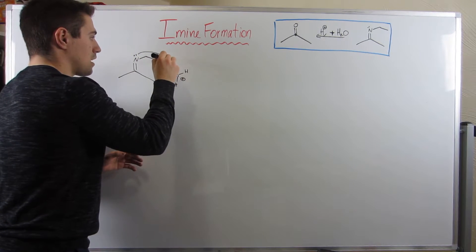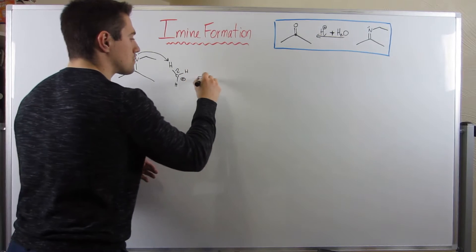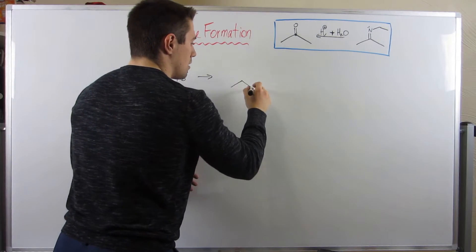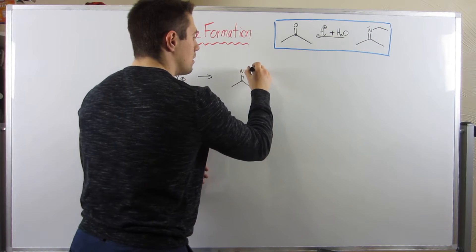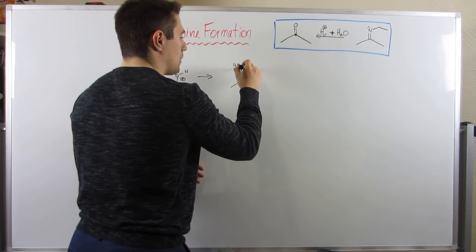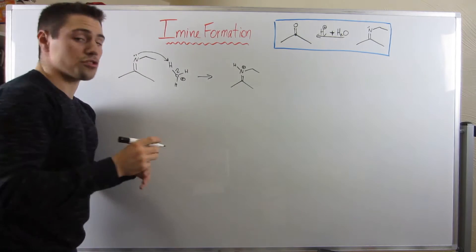Let's protonate that nitrogen. Grab the H, draw the result of that. We still have a double bond, the ethyl piece, and now we have a hydrogen and a plus charge on the nitrogen.